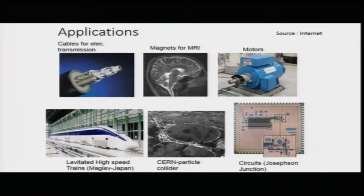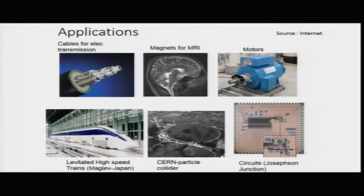Superconductivity as a phenomenon has multiple application possibilities: MRI magnets, zero-loss power transmission, magnetically levitated trains, and circuits. Josephson junctions are a key effect — Cooper pairs tunneling across a thin interface interfere to produce the Josephson phenomenon. Research in superconductivity continues, with people working to go beyond BCS theory to understand other superconductors. The field remains one of the richest areas at the forefront of solid-state physics.